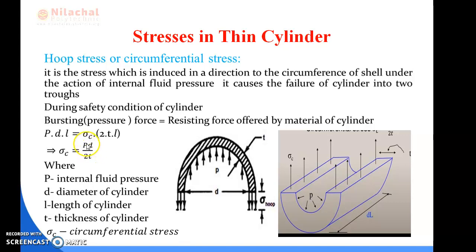So the circumferential stress sigma c equals PD divided by 2T, where P is the internal pressure, D is the internal diameter of the cylinder, and T is the thickness of the cylinder. Circumferential stress acts along the diameter of the cylinder. Thank you.